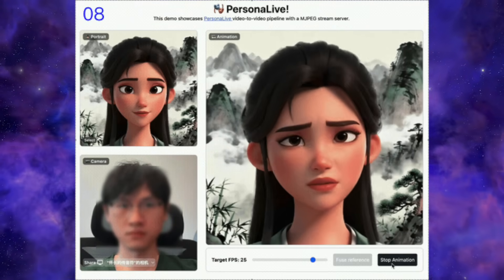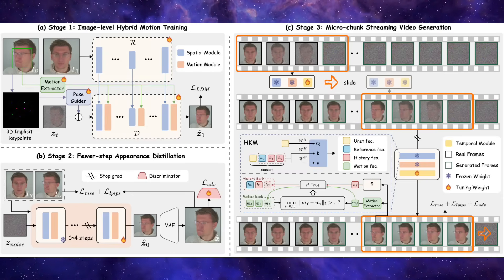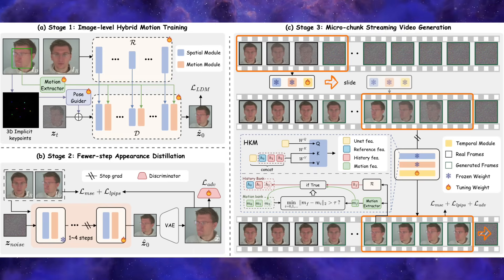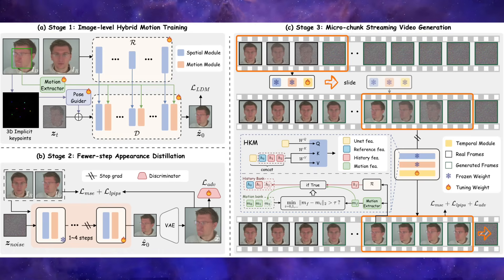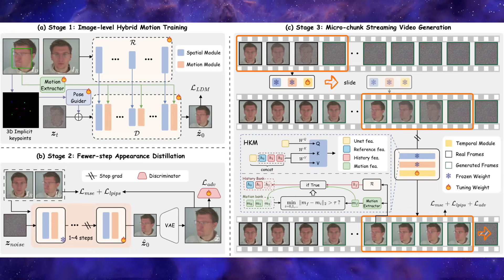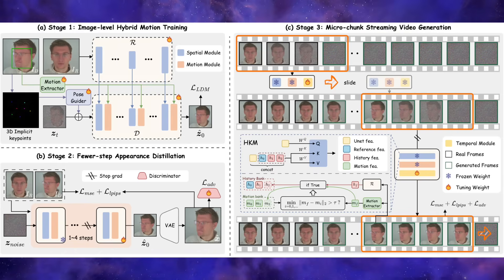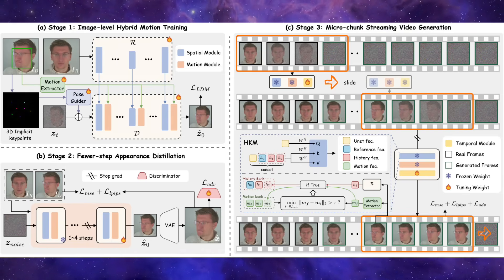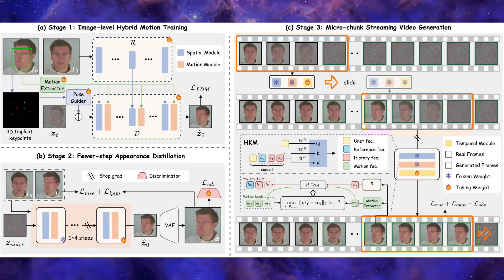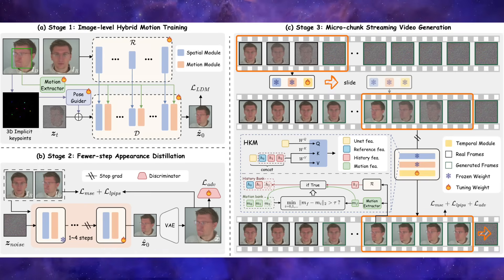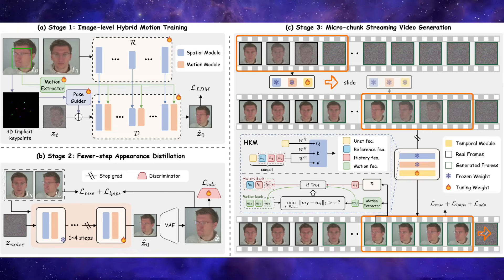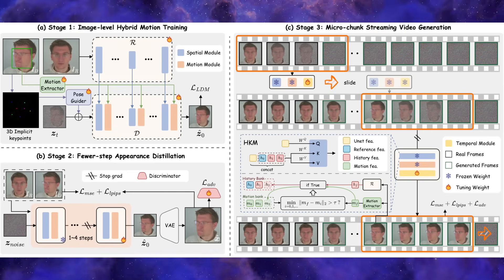The secret sauce behind this performance is a three-stage tech stack. First, it uses hybrid motion signals, combining implicit facial representations for expressions with 3D implicit key points to handle global head movements. Second, the researchers implemented a fewer-step appearance distillation — they realized that the basic structure of a frame is decided in the first few denoising steps, so they distilled the model to eliminate the redundant steps usually spent on fine-tuning textures. Finally, it uses an auto-regressive micro-chunk streaming paradigm, which breaks the video into tiny pieces and uses a sliding training strategy to ensure the animation stays consistent over long periods without crashing or drifting.